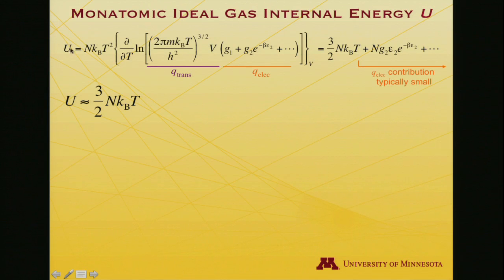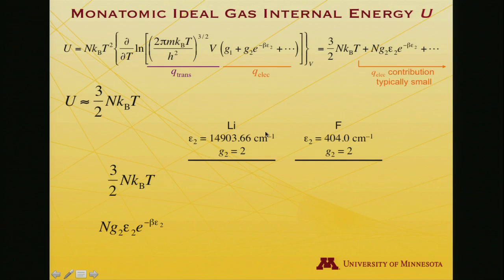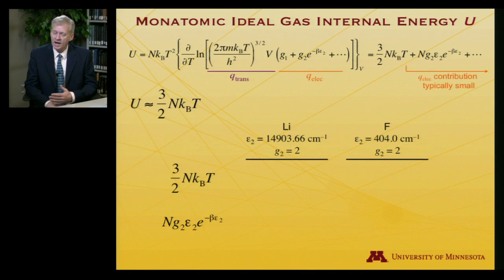It's dominated by the translational contribution because the fraction of molecules in excited electronic states is usually extremely small at low or normal temperatures—anything much less than thousands of degrees. Actually, let's explore that and put some numbers on it. I say this is the way it is, but let's really look at the numbers. Let's consider first the lithium atom, which has a first excited state 14,904 wave numbers above the ground state with a degeneracy of two. Then there's the fluorine atom with a first excited state a mere 404 wave numbers above the ground state, also with a degeneracy of two.